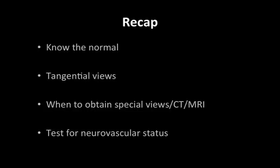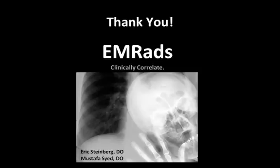We went over a lot of stuff — let's recap the basic points. Always know the normal so you can identify pathology. Always get tangential views — AP and lateral — because you may see a fracture on one and not the other. Know when to obtain special views like a scaphoid view, a rotated view, or a tunnel view. When the x-ray doesn't show a fracture and your clinical suspicion is high, it's not bad to get a CT. And always, always test for neurovascular status — a good motor exam, sensory exam, and test for pulses. Thank you for listening. Stay tuned for our next episode on ischemic stroke.